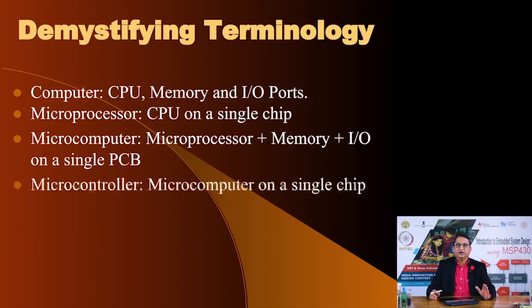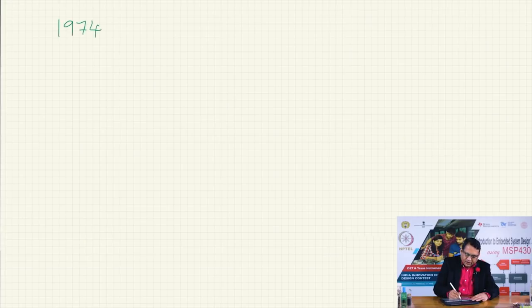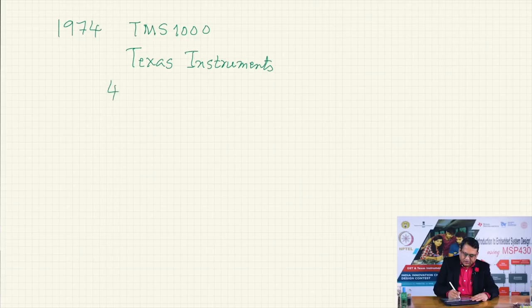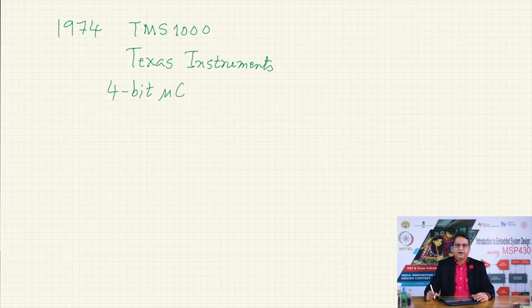Following that same trend of integration, engineers realized the entire microcomputer functionality could be placed on a single piece of silicon — this led to the microcontroller. A microcontroller is a microcomputer on a single chip. Incidentally, the world's first microcontroller was the TMS-1000, created in 1974 by Texas Instruments — a 4-bit microcontroller.